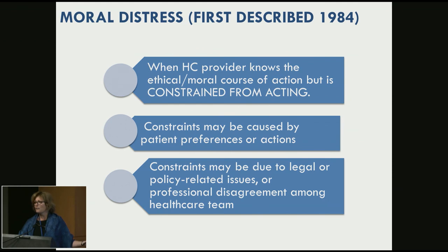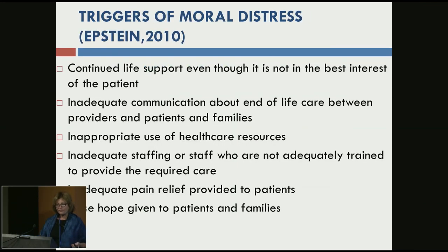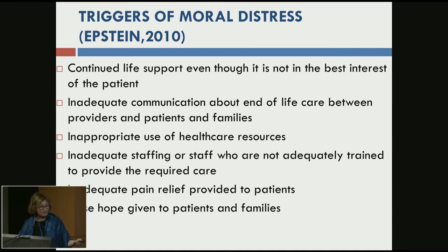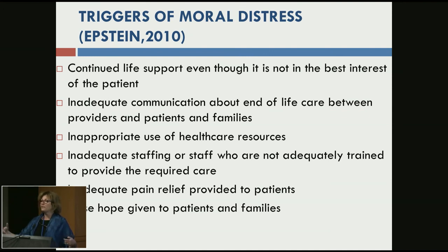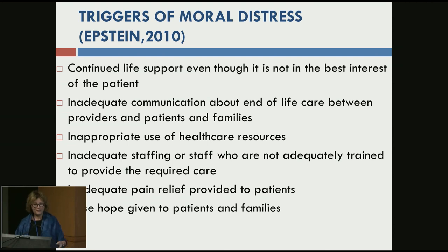The film Wit on HBO demonstrates moral distress well. Triggers of moral distress include continued life support when it's not in the best interest, inadequate communication about end-of-life with families, inappropriate use of healthcare resources, and false hope being given to patients and families. Often continued life support is caused by families insisting on aggressive care when it's no longer appropriate. When we talk about pathological grieving, families that can't accept what's happening — as long as life is being prolonged, even though we really think it's a death being prolonged — the family feels better because they don't have to face eventuality.